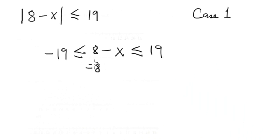Subtracting eight from both sides gives minus 27 on the left, this cancels, we have minus x, and this is 11 on the right.